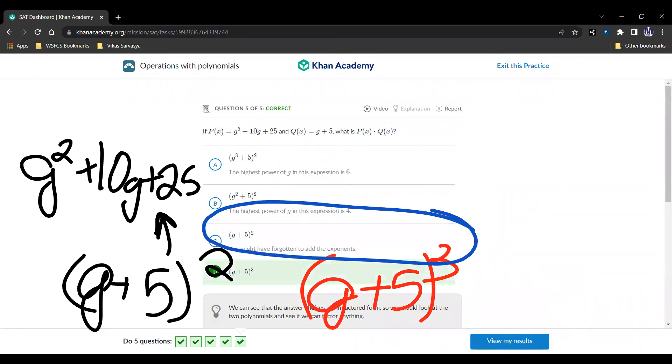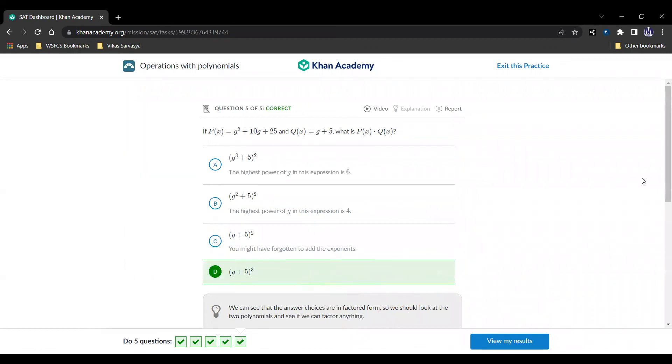Alright, as you can see, this topic is mainly about taking the polynomials and articulating them however the question asks us to. There's nothing that complex. It's like using the basic arithmetic operations except with polynomials, but this is just another application of our algebra skills. We're going to continue in the next video with our Passport to Advanced Math. I'll see you then.